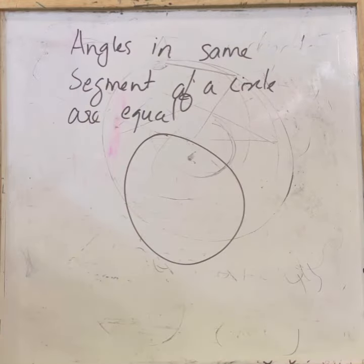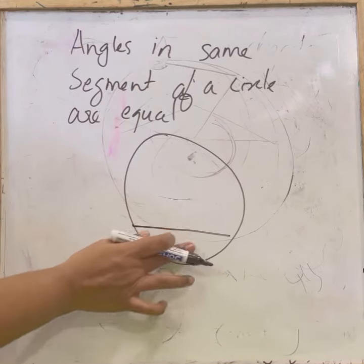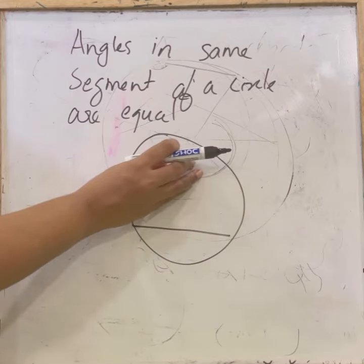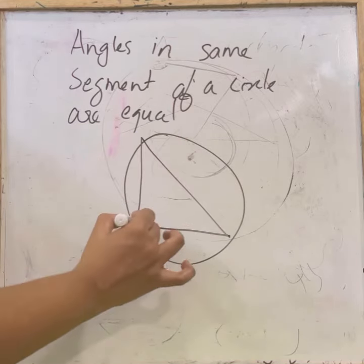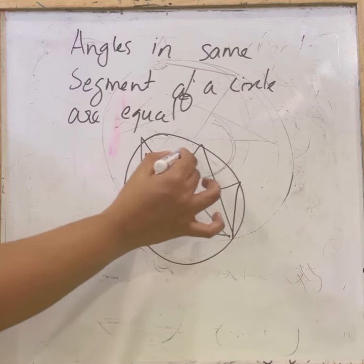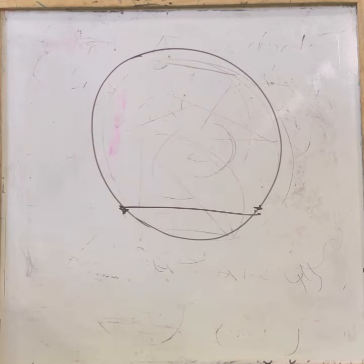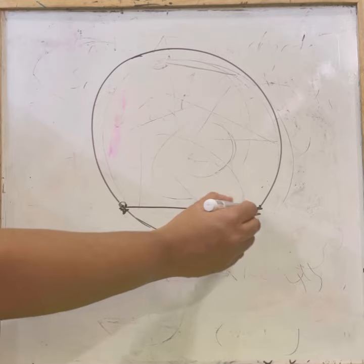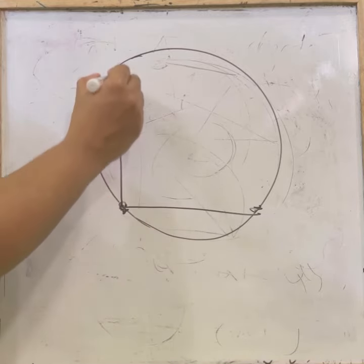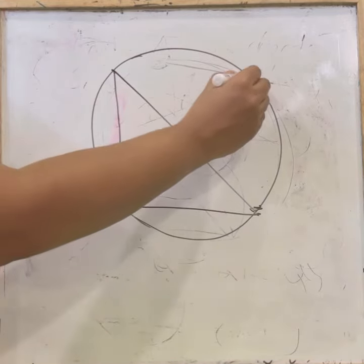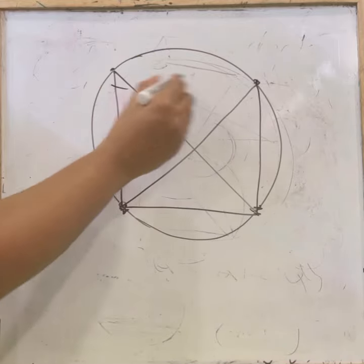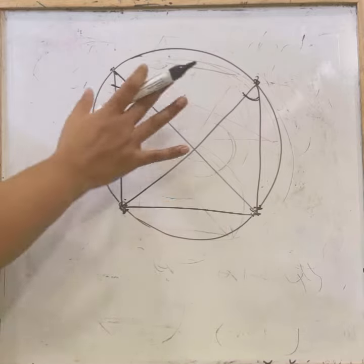Next theorem: angles in the same segment of a circle are equal. If there are many angles in the same segment, all will be equal. Also, if a line joining two points subtends equal angles at two other points on the same side, then all four points lie on a circle and are concyclic.